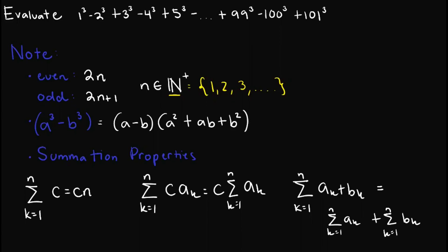Hi there, for this video, we'll be trying to solve this problem on algebra. So we are given evaluate 1³ - 2³ + 3³ - 4³ + 5³ and so on until plus 99³ - 100³ + 101³. For this problem, we will require several basic concepts on algebra in order to solve this one.